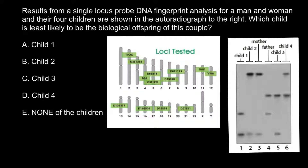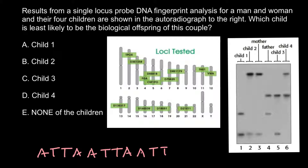In the CODIS system, special sites were chosen on 13 chromosomes. At these sites, people have a variable number of tandem repeats. For example, consider a core sequence like ATTA — this sequence can repeat many times: ATTA, ATTA, ATTA — repeated three times. One person may have three repeats at a site while another person may have five repeats.